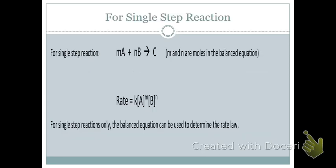We're going to start off with a single step reaction, meaning there is no mechanism in place. If I have a single step reaction, I can actually write the rate law from the balanced equation, and the coefficients become the orders of the reactants. The deal is, though, very few reactions are actually single step reactions. Most of them require a mechanism. They're very rare, so you might want to write that down.